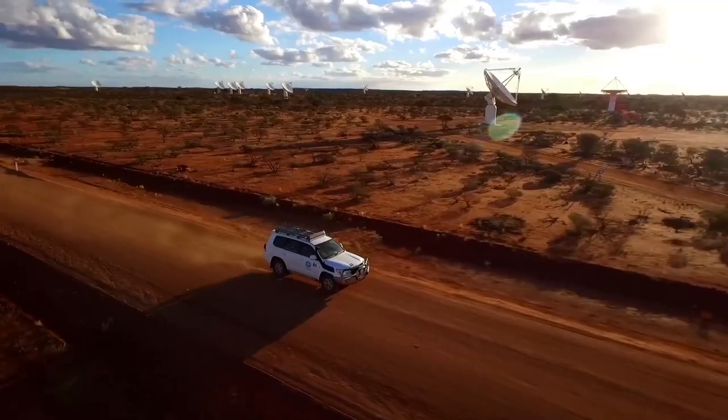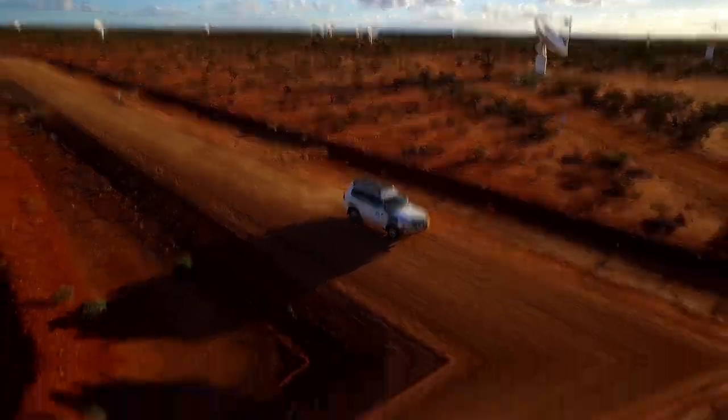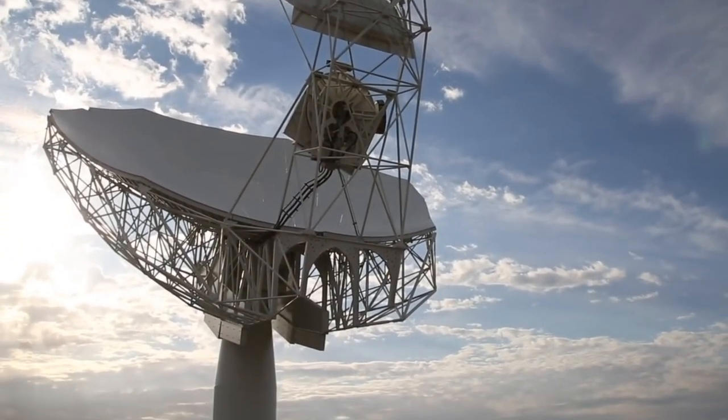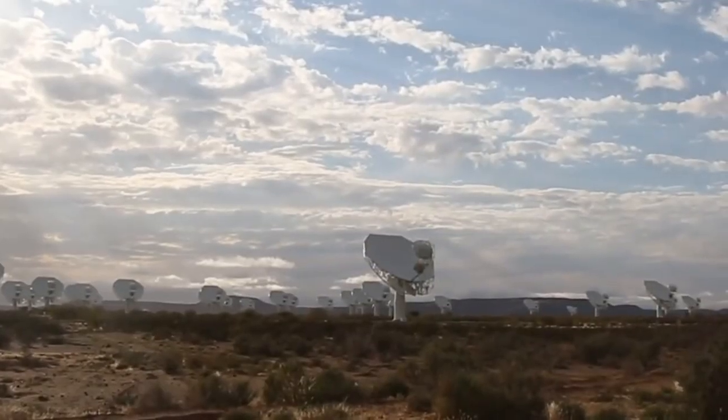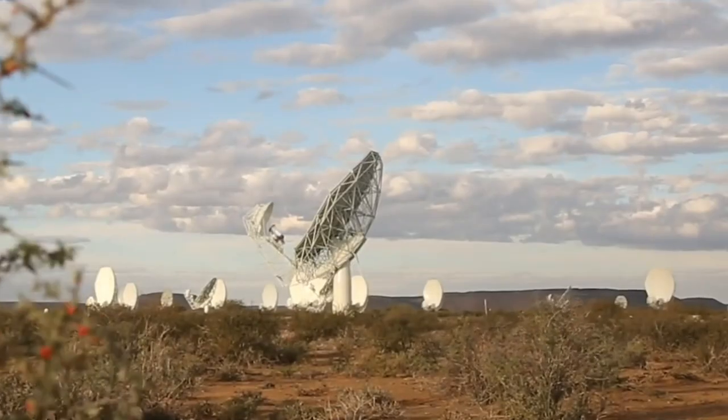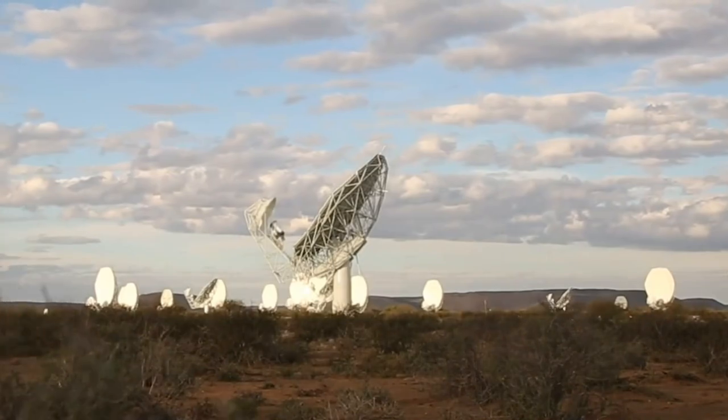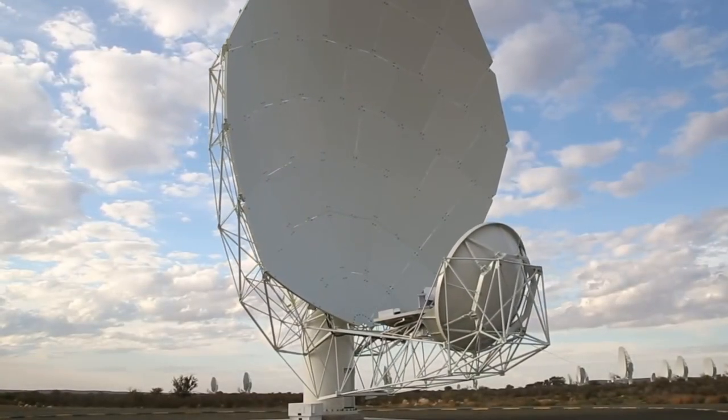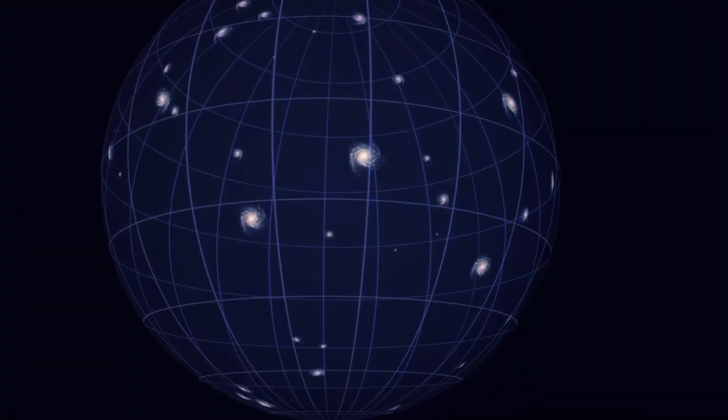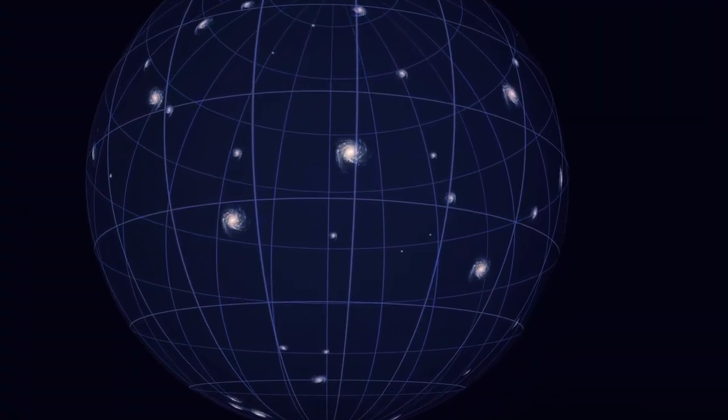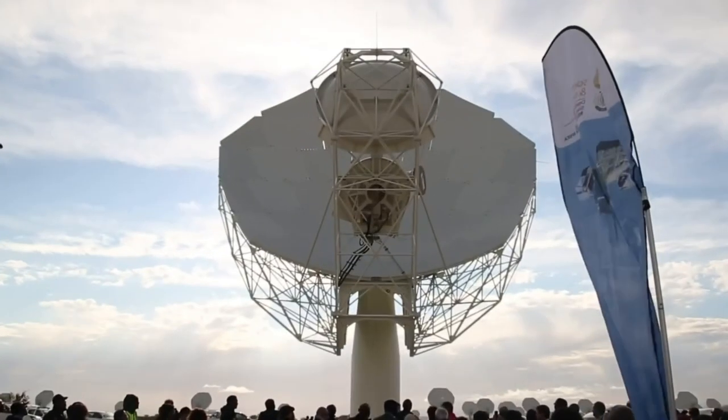But if astronomers want to map the universe on the largest scales possible, they can instead use the telescopes individually and then collect the data afterwards. In South Africa, MeerKAT already has 64 radio telescopes set up that are working individually to map the universe on a truly huge scale.